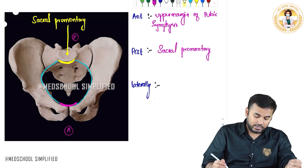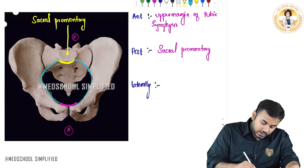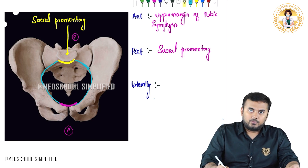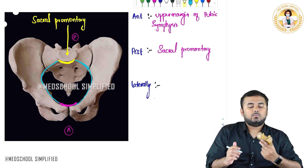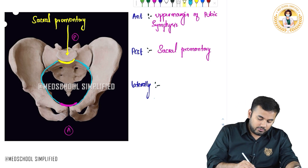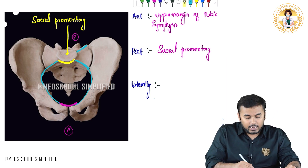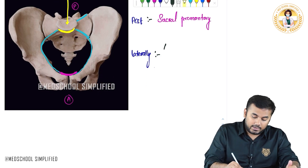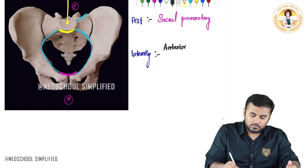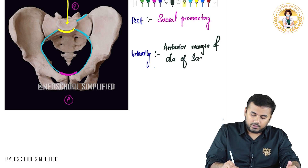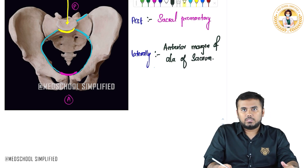On the lateral sides there are three important structures. From here to this point, this is called the ala of the sacrum bone. The ala of the sacrum has two margins: the anterior margin and the posterior margin. The first lateral structure is the anterior margin of the ala of the sacrum.